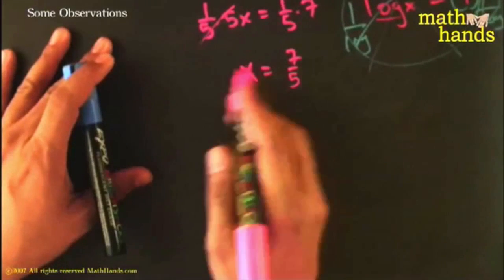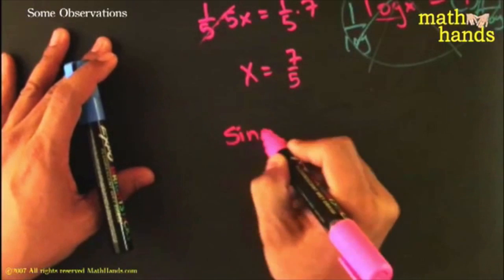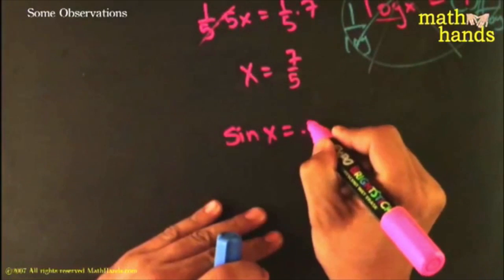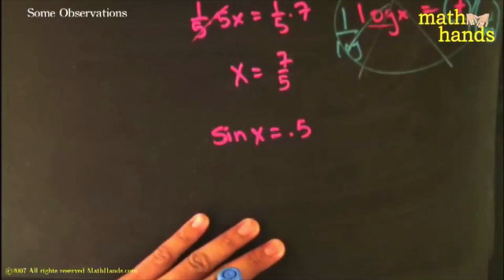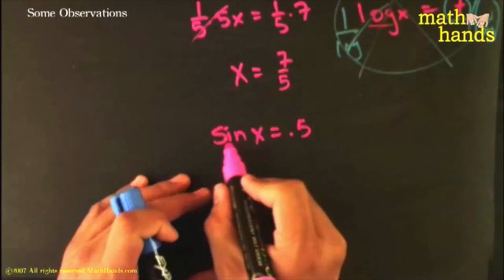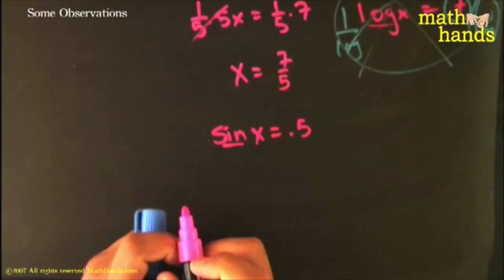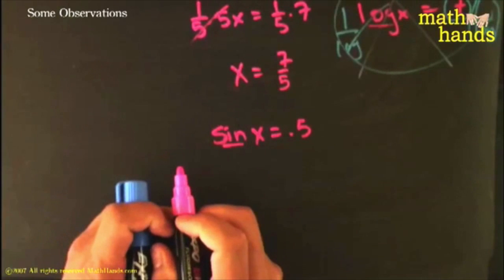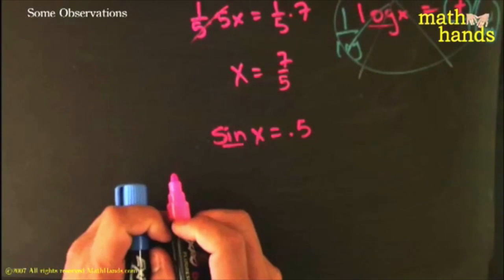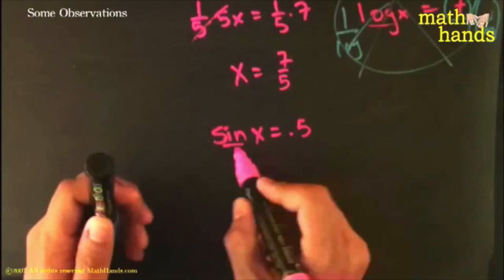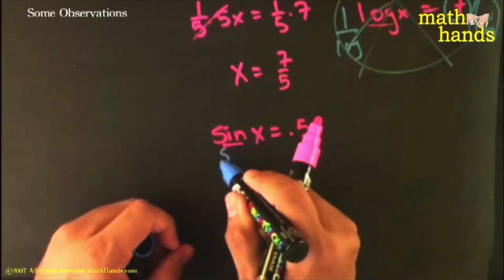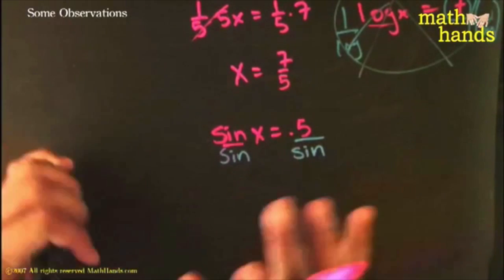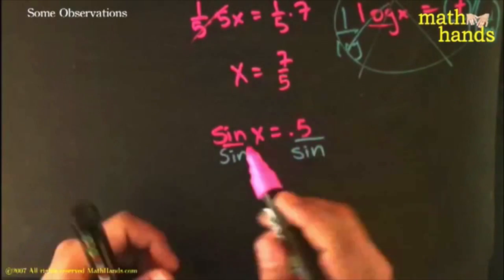Same thing with sine. Suppose you have sin(x) = 0.5. Do not treat sine like a number - it is not a number. You cannot divide both sides by sine. If you try to play that game and divide this side by sine and that side by sine, you're going off into la-la land and you're going to get the wrong results.